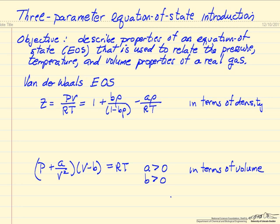So the simplest is the van der Waals equation of state. This is the case where now we can write z, z is the compressibility factor, and relate it to the pressure, the volume, gas constant, and temperature.